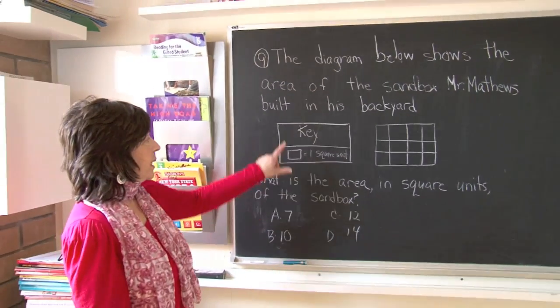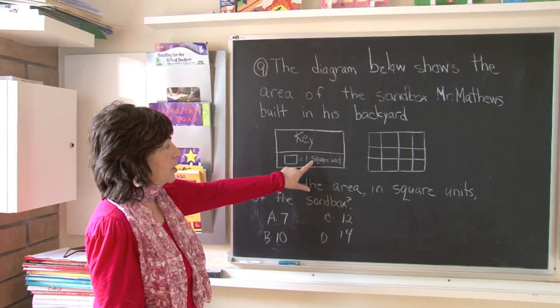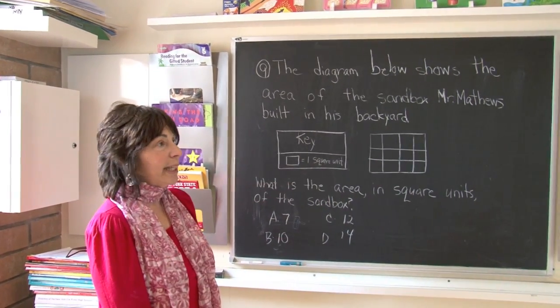Boys and girls, look at the key. Each little box stands for one square unit. So you can simply count the boxes.